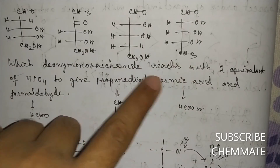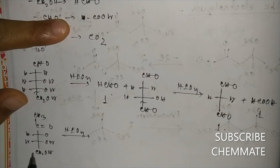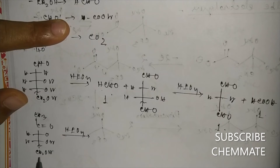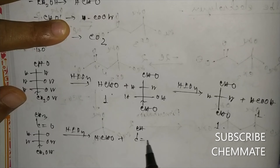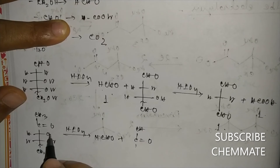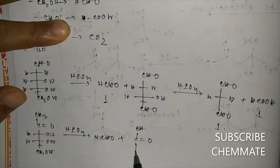We check which molecule reacts with two moles of HIO4. For the second monosaccharide, the CH2OH part is converted to HCHO, and the lower H3 group also converts to HCHO. With the structure OH-CHO-OH-H, this is analyzed further.